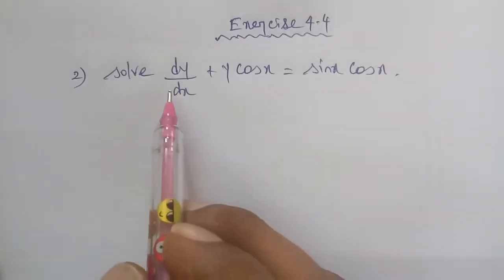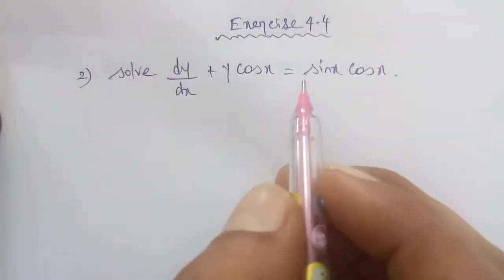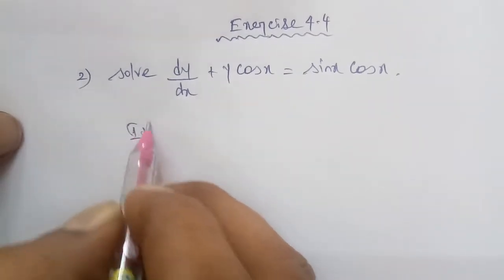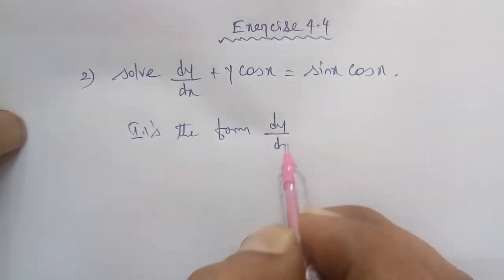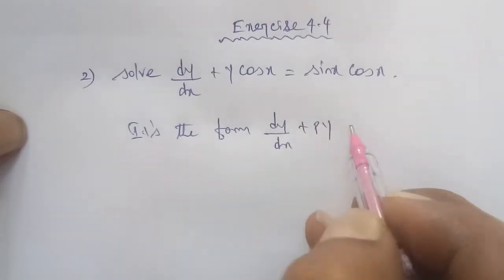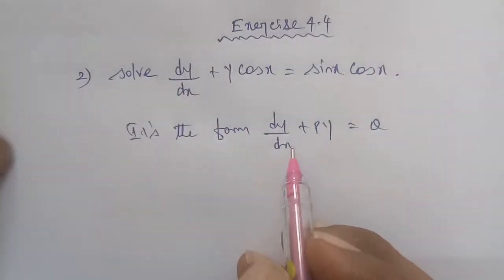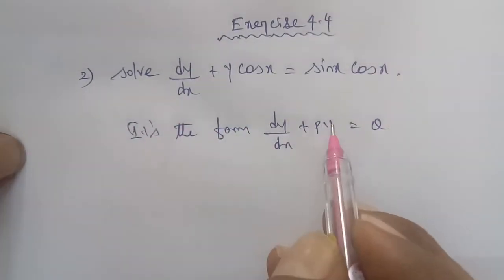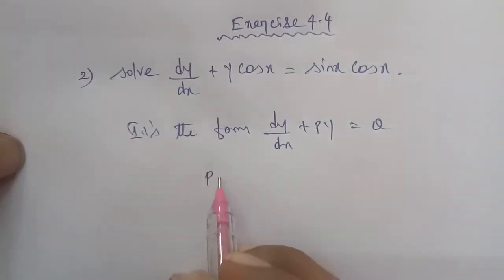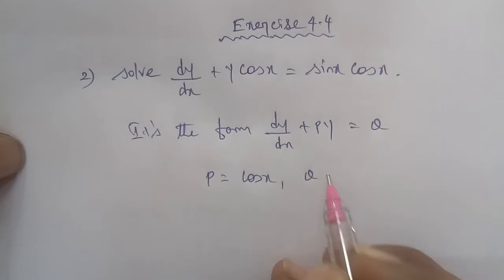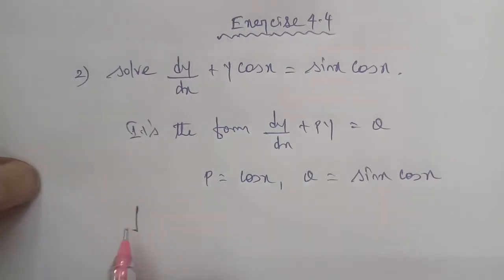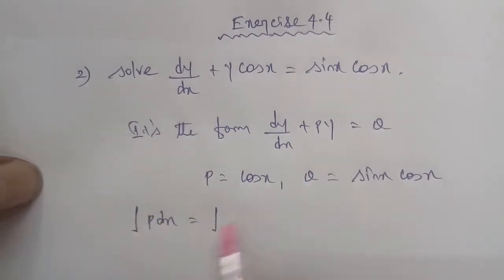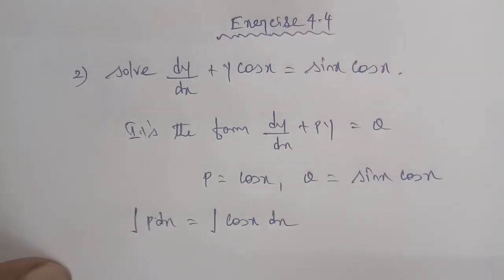In the previous example, it is the format of dy/dx plus Py is equal to Q. So, comparing with this format, P is equal to cos x and Q is equal to sin x cos x.